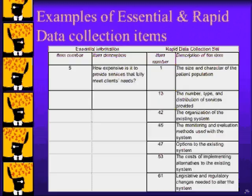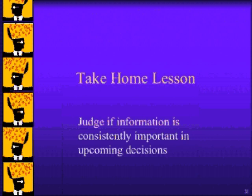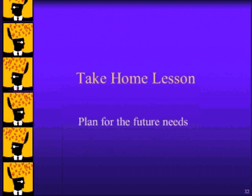Here we see that information item 5, which is focused on the cost of services, is judged to be important in all decisions. We also see that the size and character of the patient population and six other pieces of information are important in most, but not all decisions, and therefore are judged to belong to the rapid data collection set. Many other items belong to the periodic and ignored data sets. This example has shown you how to use average and range of ratings to decide whether a piece of information is consistently important in upcoming decisions. The take-home lesson is simple: prepare for the future, because the last organizational crisis is already over.